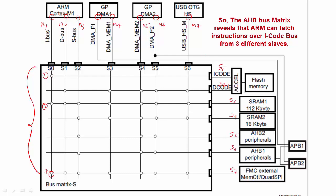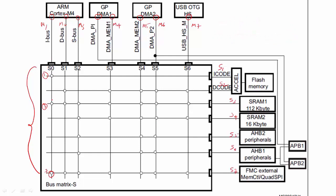The iCode bus can also fetch instructions from the SRAM through the iCode interface, and it can fetch instructions from external memory connected to the external memory controller. This means the ARM processor cannot execute instructions from peripherals — there are no fuses for that. This also indicates that the ARM processor can fetch instructions from SRAM1 over the iCode bus, as shown by this connection.